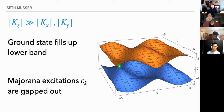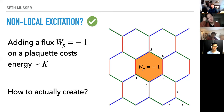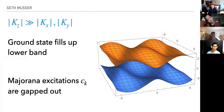What do the excitations look like? I promised fractional excitations and maybe even anyons. We start in the K_z much greater than K_x, K_y phase and get some band structure — we fill up the lower band and gap out the Majoranas.